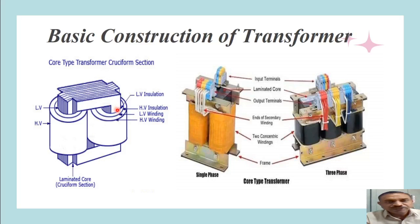The insulation thickness, and thereby cost, is decided by the voltage level. After the LV winding, there will be insulation belonging to the HV winding voltage level, then the HV winding, and again LV. This is repeated as per the requirements of the number of turns decided in the design consideration.